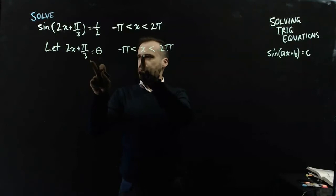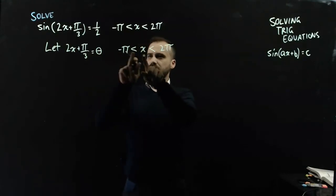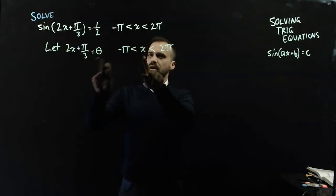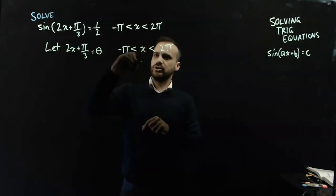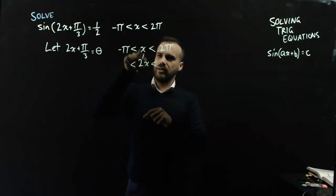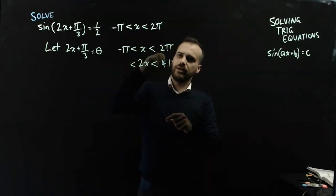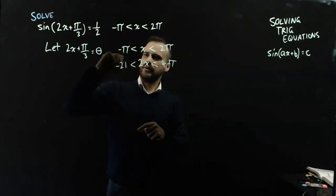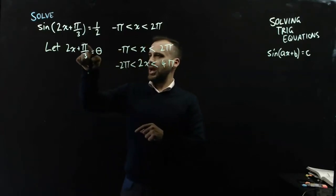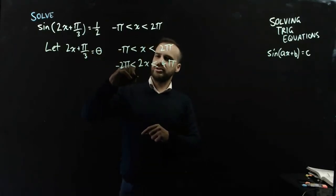Now, theta is 2x plus pi on 3, and I can convert x into 2x plus pi on 3 by first multiplying it by 2. Now if I multiply that by 2, I'm going to have to multiply everything else by 2. And then by adding pi on 3 to it.